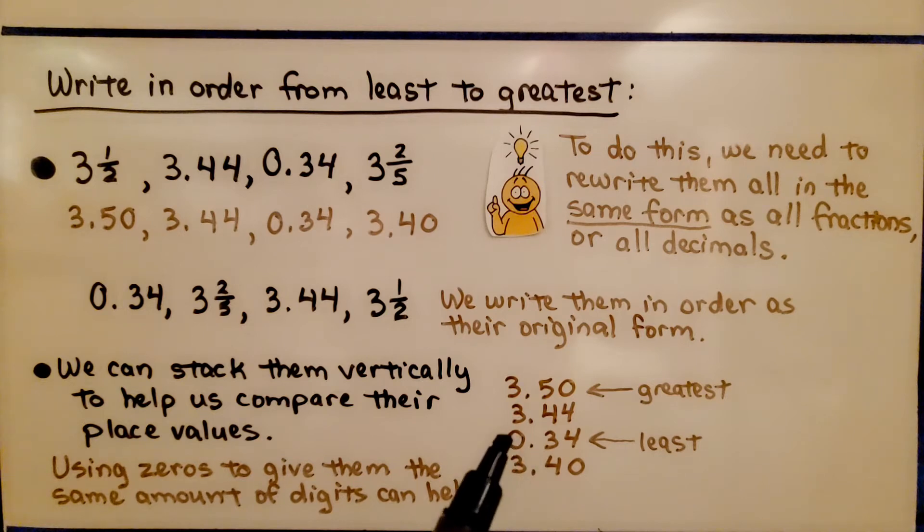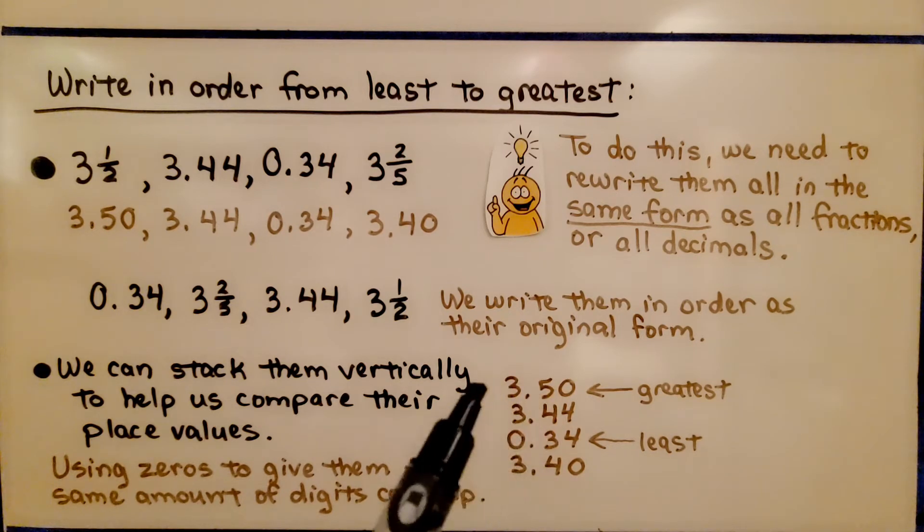We see that this is zero whole number, so that's the least. And this has the most, so that's the greatest.